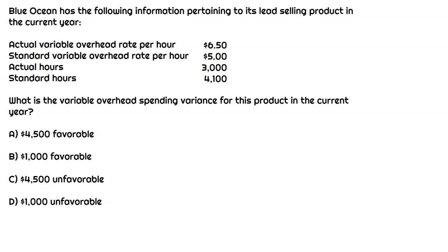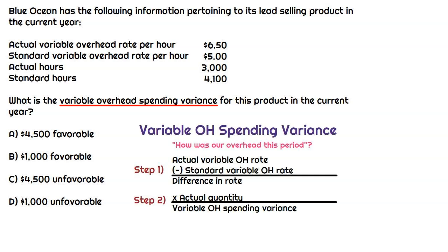The question gives us some information for the lead selling product from Blue Ocean. We see the actual variable overhead rate, and they also tell us the standard variable overhead rate, as well as the actual and standard hours. We don't know whether that's direct labor hours or manufacturing hours, but that's likely the driver. We're focused on the variable overhead spending variance in the current year, comparing the actual variable overhead rate to the standard variable overhead rate. We have a two-step approach, so let's do it.